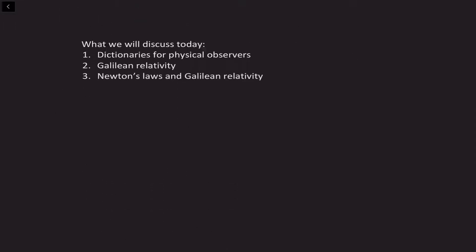So today, we're going to discuss three things. We will discuss dictionaries for physical observers - that is, how different observers translate ideas of physics between themselves. In particular, we'll talk about the ideas of Galilean relativity that all of you are probably used to. And we will discuss how different observers in a state of uniform motion relative to each other translate different observations. We'll then see that physical laws, like Newton's laws, actually obey this principle of Galilean relativity.